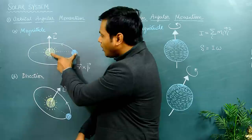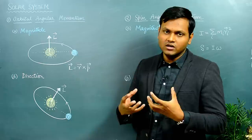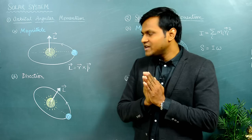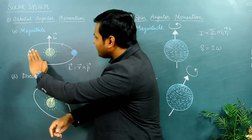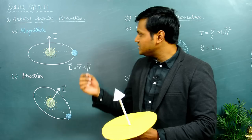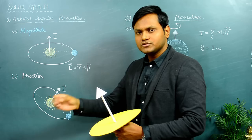L represents the angular momentum, R represents the position vector of the Earth from the axis of rotation, and P represents the linear momentum associated with the Earth's motion. The Earth has a certain orbital velocity tangential to its orbit, which corresponds to the linear momentum. Importantly, the angular momentum has a direction which is perpendicular to the plane of motion of the Earth around the Sun. I have created a 3D model because this is a three-dimensional motion, and it can sometimes be difficult to understand on a two-dimensional blackboard.